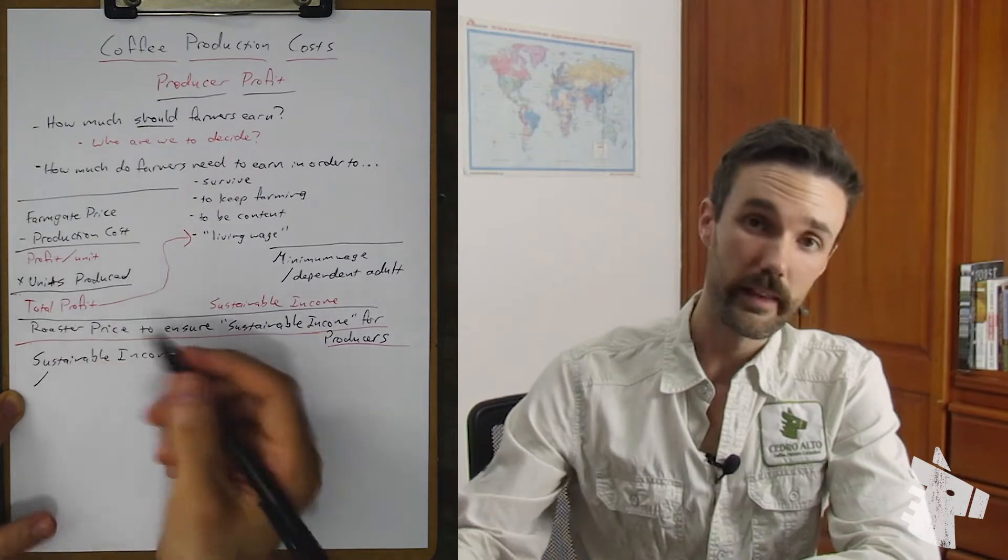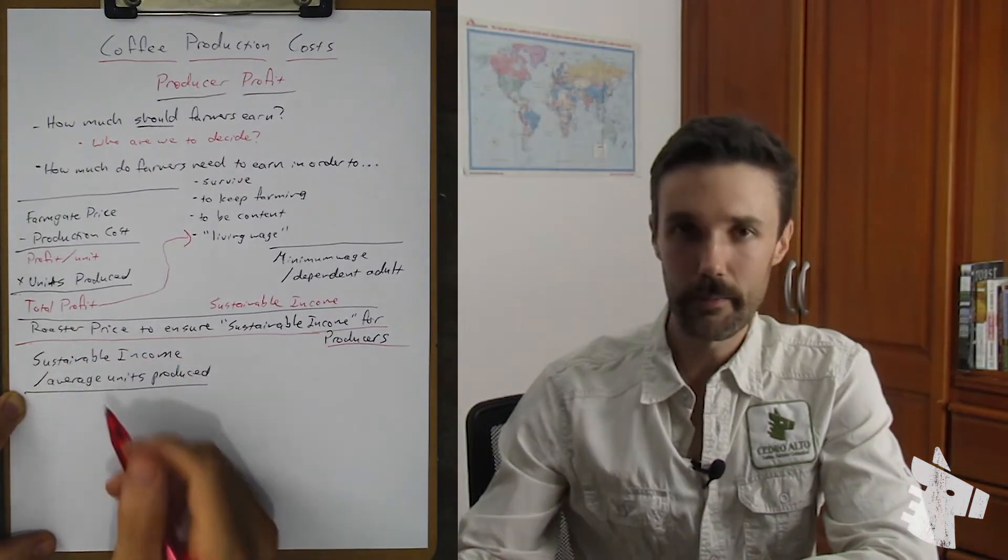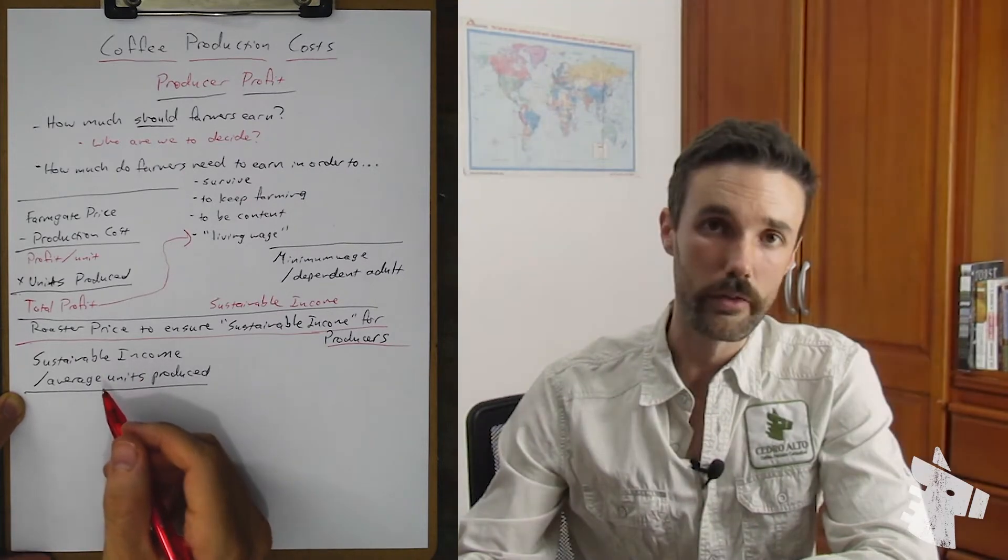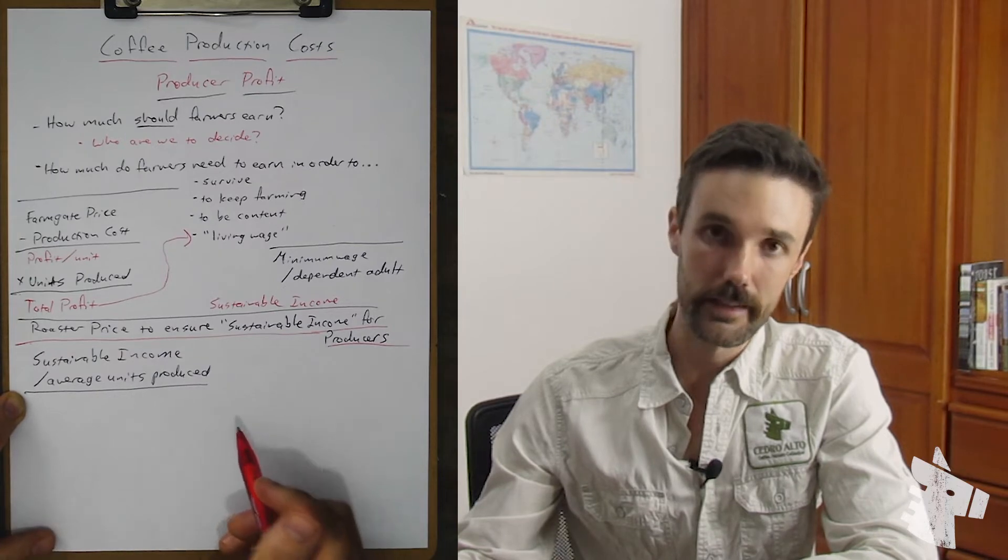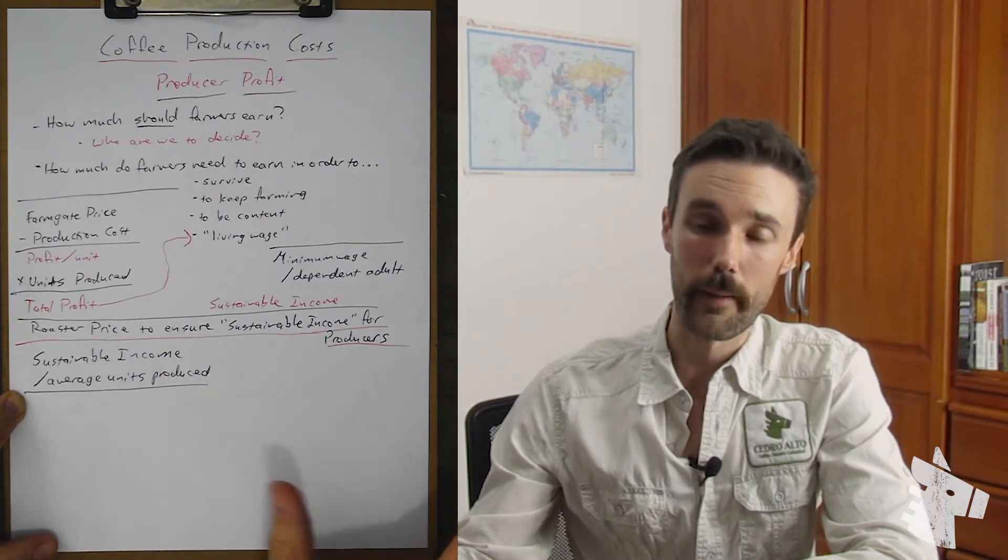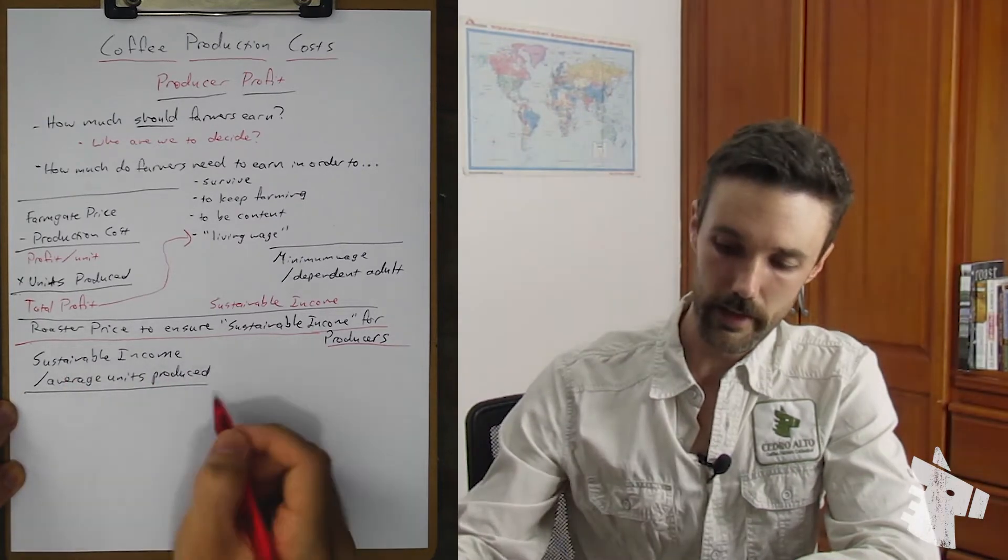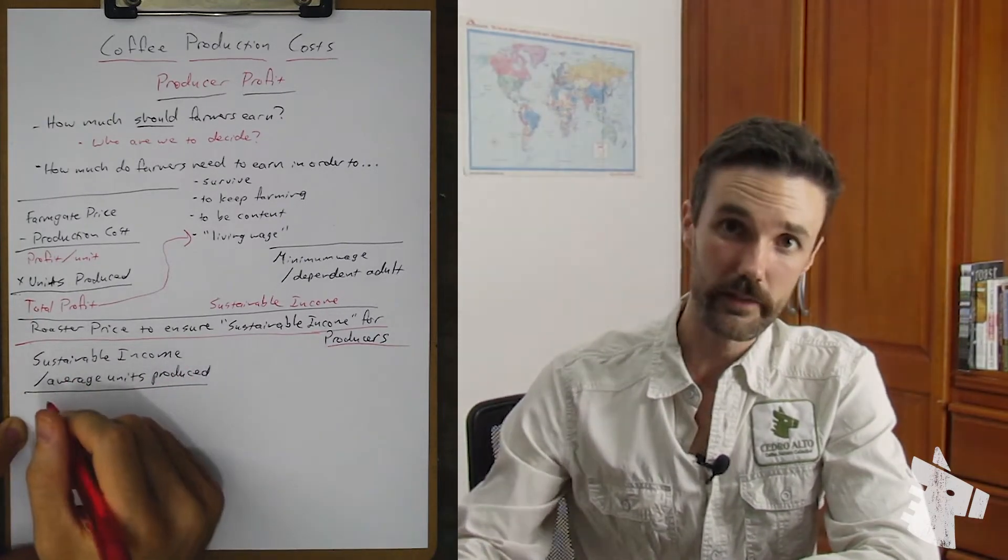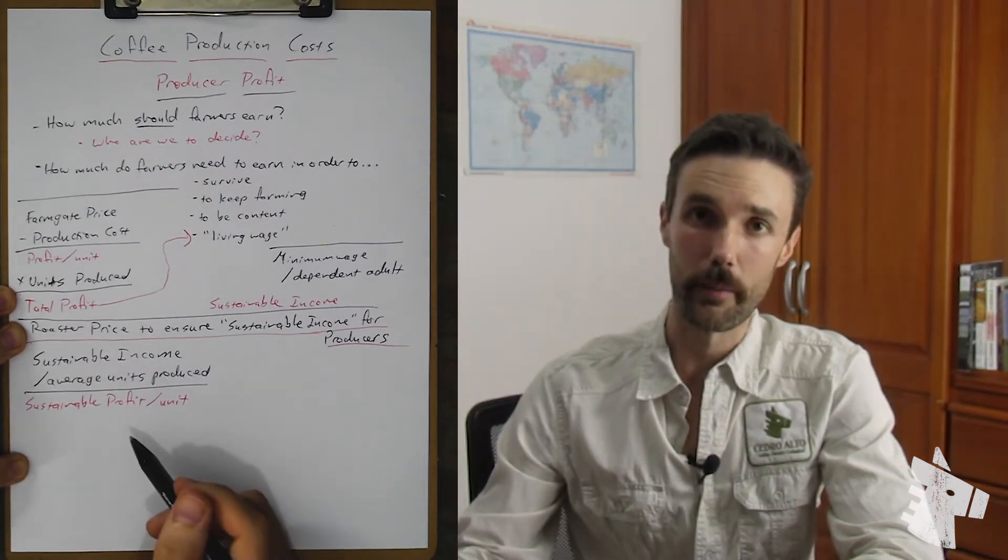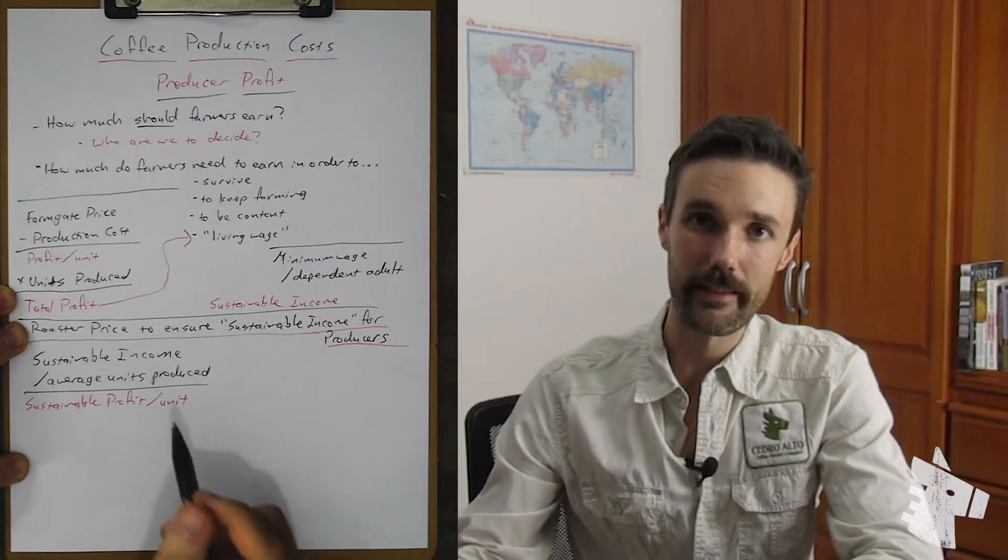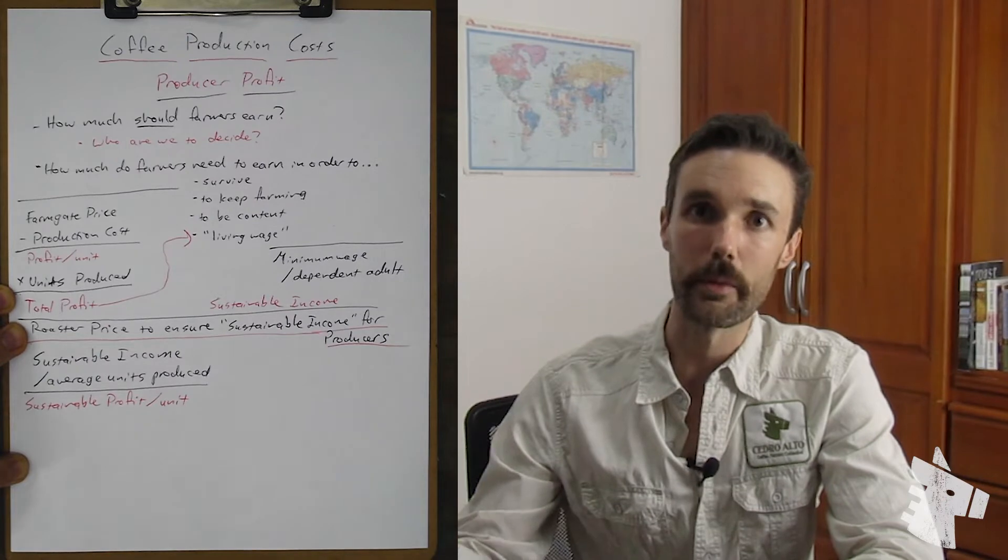Let's start with the sustainable producer income or living wage. Divide this by the average number of units produced. This can be done in a very specific sense for one farm, or it can be done in a very general sense taking average numbers, such as the average farm size and yield for the population of producers that you're considering. Dividing the sustainable income by the average number of units produced will give us the sustainable profit per unit. So this is not the per pound sale price that the farmer needs. This is what they need to end the year with. This is the bottom line number after all is said and done that they need to be able to live happily.